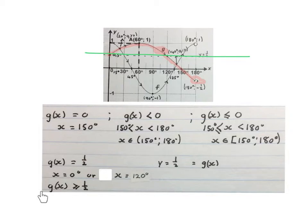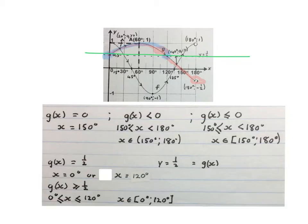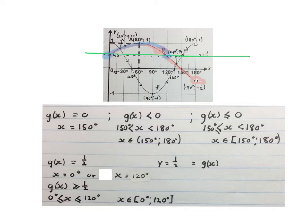The next question asks where is g of x (the red graph) bigger than or equal to a half. The answer is x is bigger than or equal to 0 and x is smaller than or equal to 120 degrees — that is the portion of the graph including where it crosses the green line. You can also write it in interval notation.